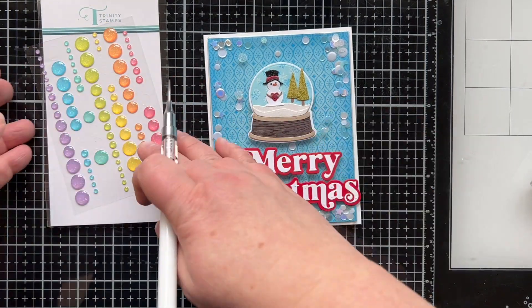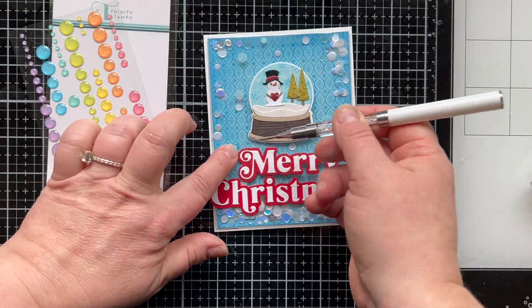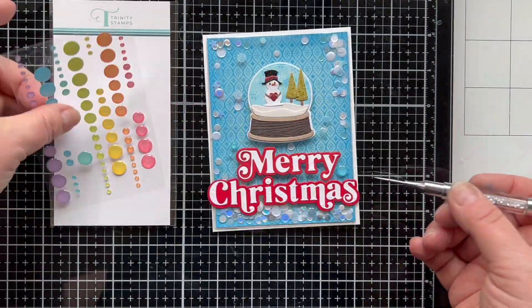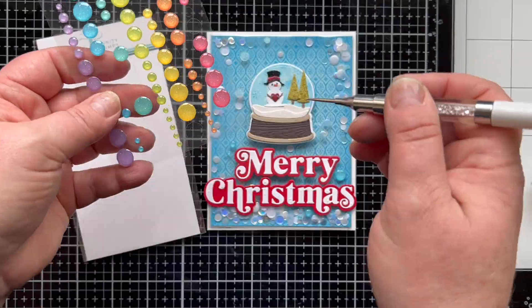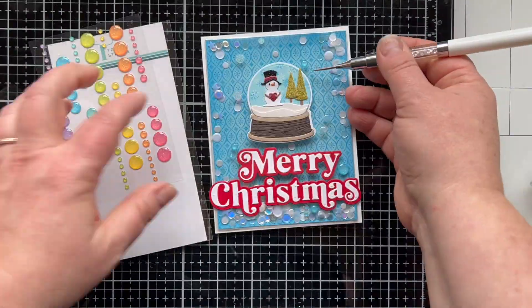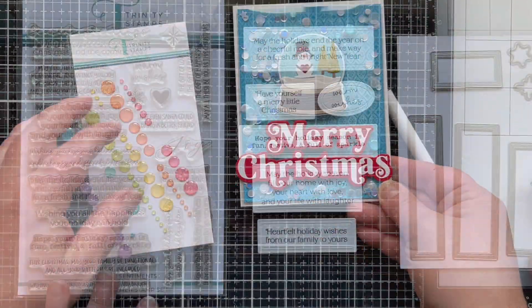I have these glitter filled enamel dots in rainbow color but I'm gonna take that turquoise blue and add a few to the top layer of my card. I just wanted a little bit more blue, a little bit more bling, a little bit more glitter so I added them to finish off the front of the card. But I don't want to leave out the inside of the card.